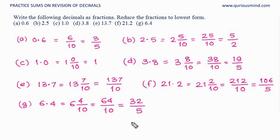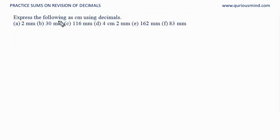Let's do the next one. Express the following as centimeter using decimals. A, 2 mm. We know when we want to convert from mm to centimeter, we divide by 10, so that is equal to 2 by 10 centimeter. It is 2 tenths. No whole, which means it is 0.2 centimeter.